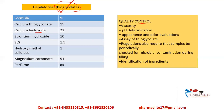Quality control tests for depilatories include: viscosity — the cream should spread appropriately; pH determination — incompatibilities in pH can affect skin and cause irritation; appearance and odor — aesthetic appearance is important; assay of thioglycolate — being a major constituent, it should be of good quality (IP/BP/USP grade); microbial contamination — samples should be periodically checked since these products are prone to contact with water; and identification of ingredients — only standard ingredients should be used since the product is applied on skin frequently.